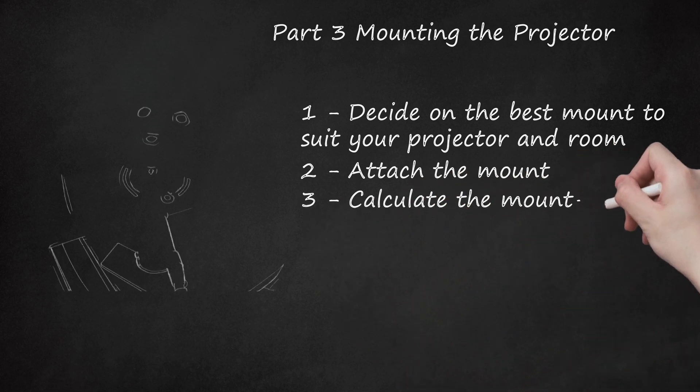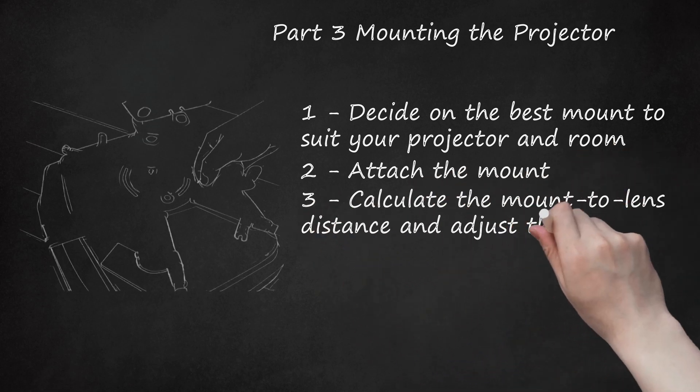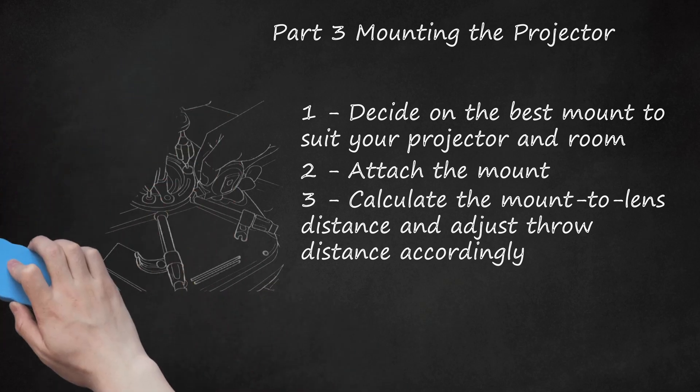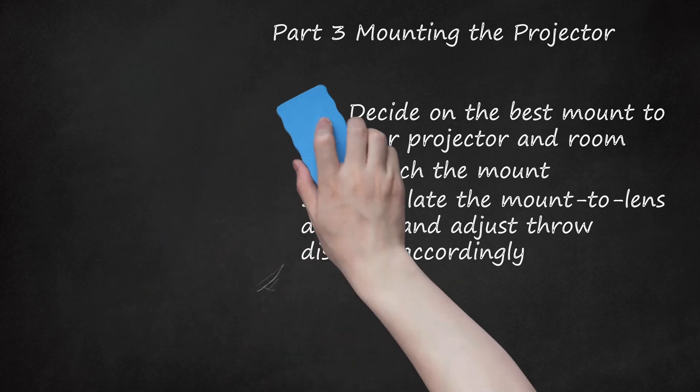3. Calculate the mount to lens distance and adjust throw distance accordingly. Use a tape measure to determine the distance between the center of the mount and the front of the projector's lens. Add this length to the acceptable range of distances between the projector's lens and the screen. If the mount to lens distance is 6 inches, the new total for an original throw distance of 16 feet is 16.5 feet.